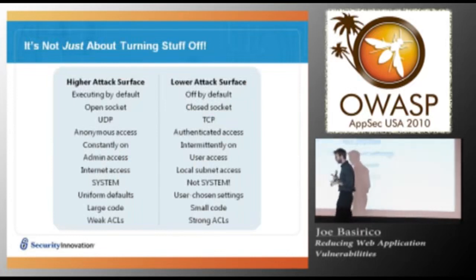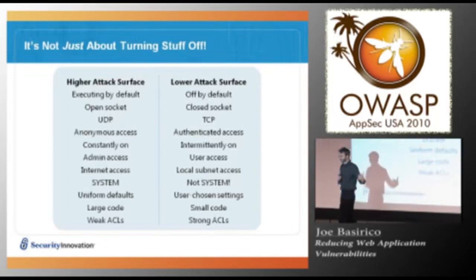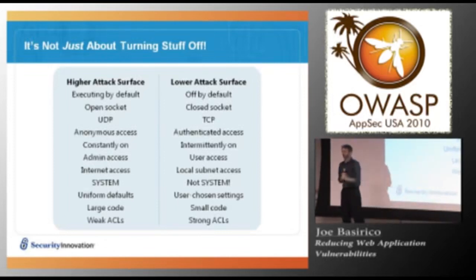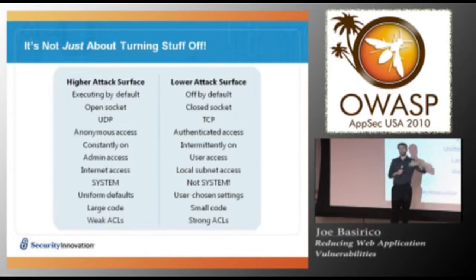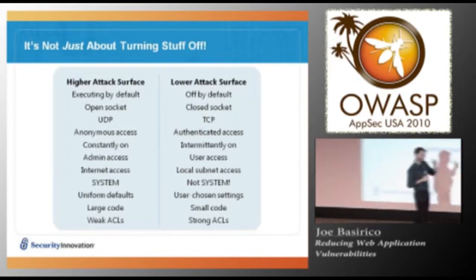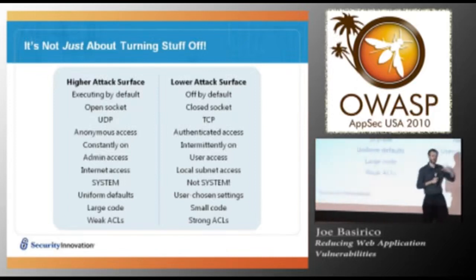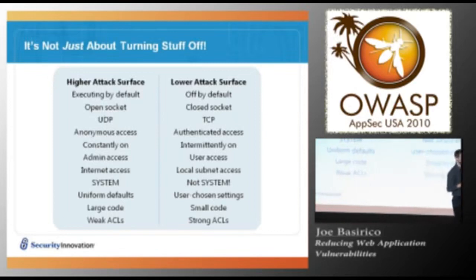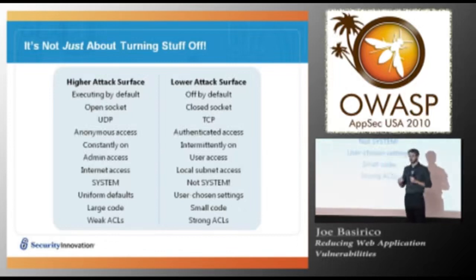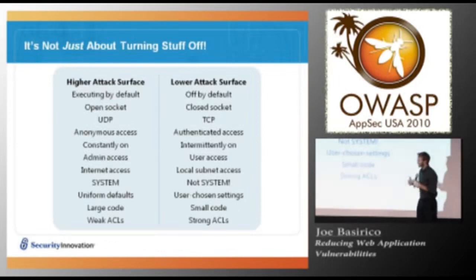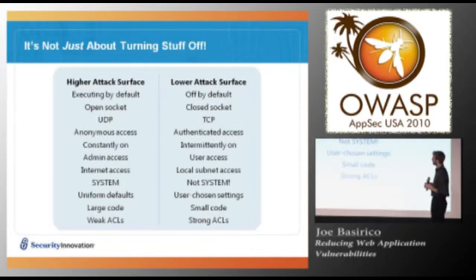It's not just about turning things off — it might be about running with fewer privileges. We might move from anonymous to authenticated; that's a good way of reducing attack surface. Maybe not every user needs to be able to write to a database table — require an advanced user role instead. We've reduced that attack surface. Maybe move something from UDP to TCP so we know the user isn't IP spoofing. Maybe an update service that's constantly on — turn that off and have small windows where it polls, adding a timing-based security element.